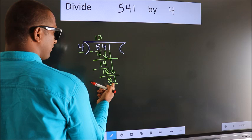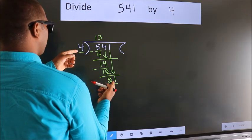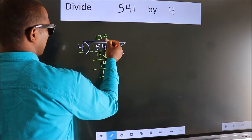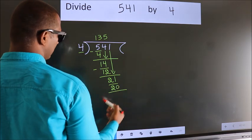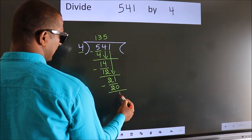A number close to 21 in 4 table is 4 times 5 is 20. Now, we subtract. We get 1.